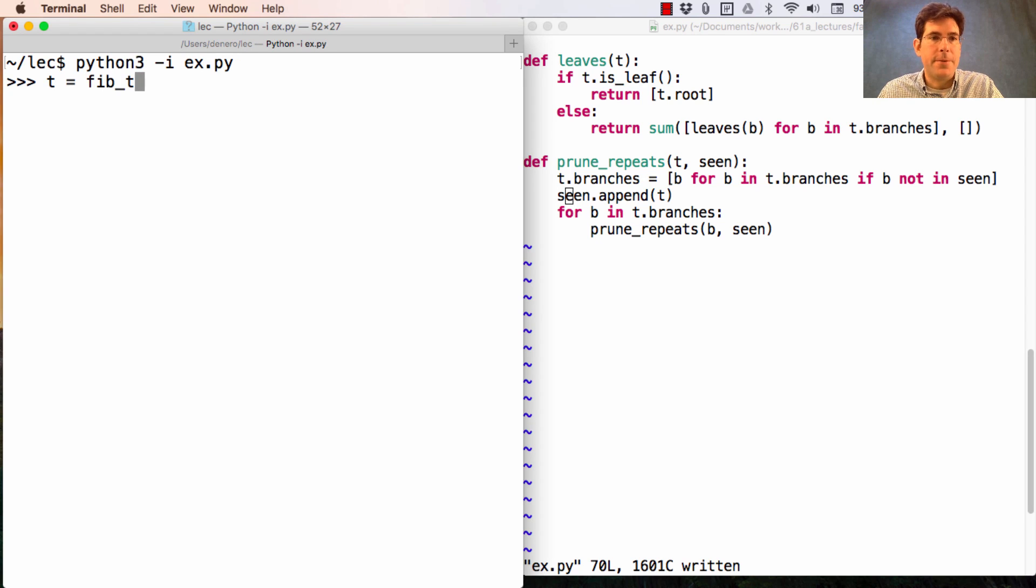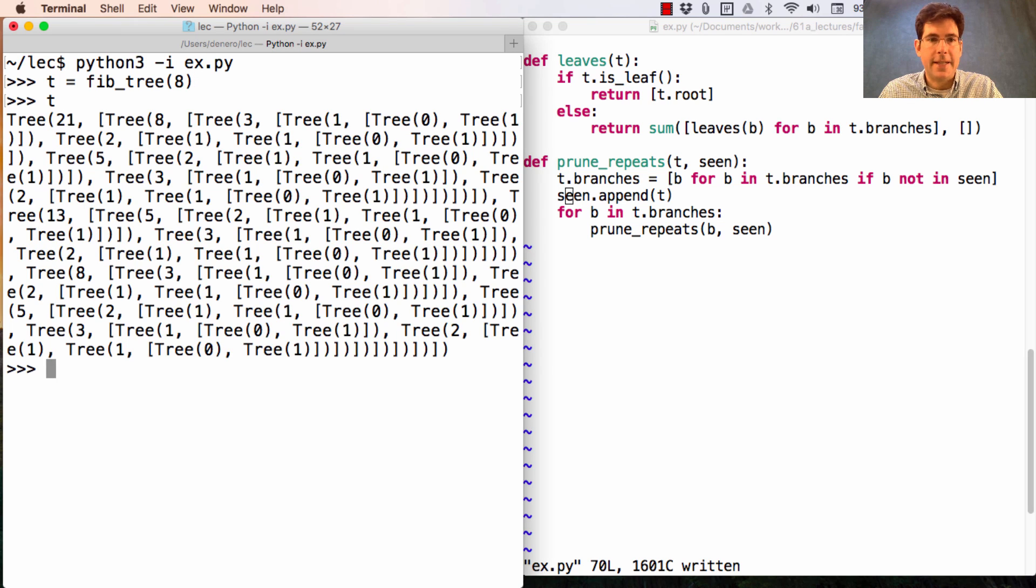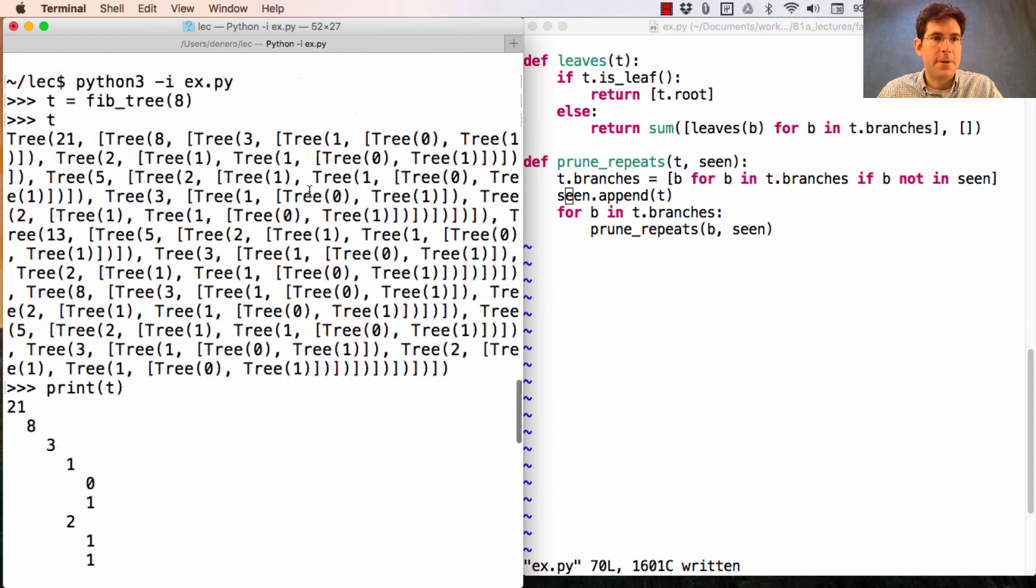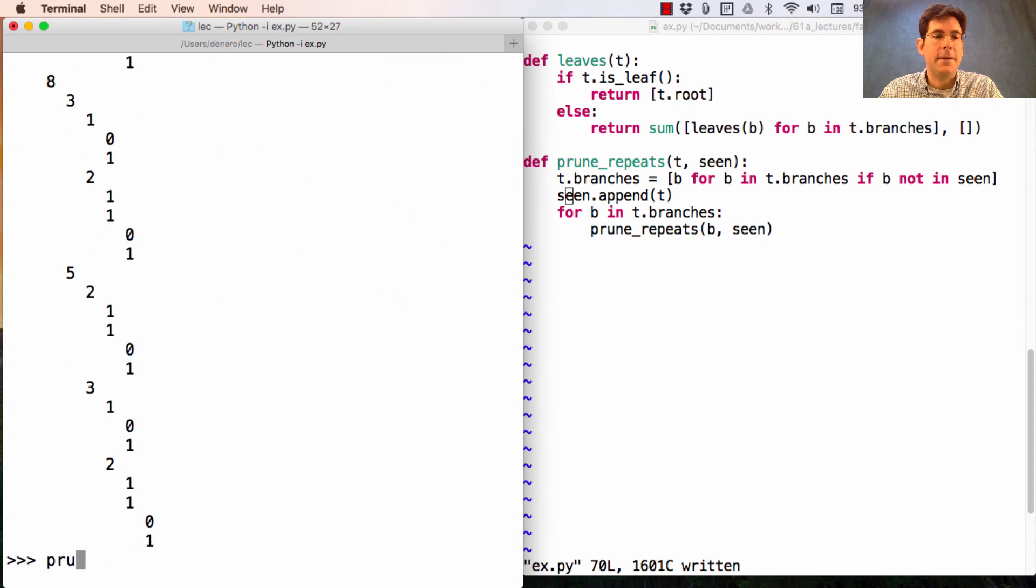Now if I build a fib tree of eight, it looks like that. If I print it out, it has a lot of substructure. But if I prune all the repeats in that tree, starting with an empty list of what I've seen before, and then print it out again, I see a much more compact structure. These don't include any repeated calls.